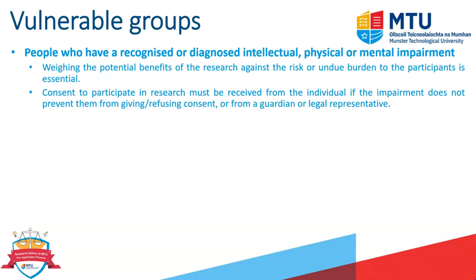For people with a recognized or diagnosed intellectual, physical, or mental impairment, researchers need to assess the potential benefit of the research against the risk, stress, or burden it could place on participants. This is where the human research ethics committee also plays a role in weighing that up. Regarding consent, if the individual's impairment does not prevent them from giving or refusing consent, they should do so themselves. If they are unable to, a guardian or legal representative comes into play, as noted in the Bearer Principles at the start of this presentation.